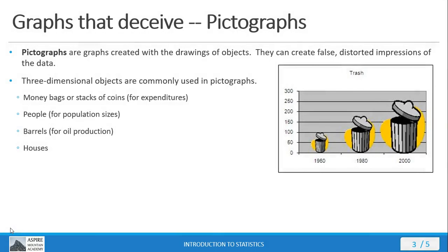Here's another way in which people communicate data in a misleading fashion. Pictographs are basically graphs created with drawings of objects, and they create false, distorted impressions of the data. Often a pictograph depicts a three-dimensional object. For example, a graph about expenditures might use money bags or stacks of coins. People are often used for population sizes, barrels for oil production, and houses for home sales or property values. They don't have to be three-dimensional objects, but they typically are.